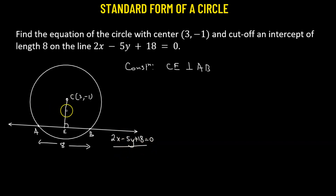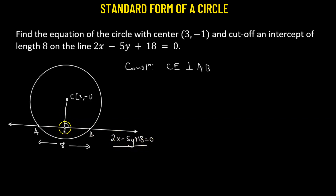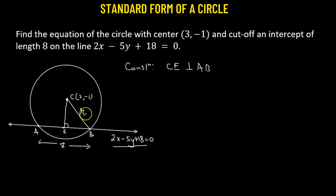Once we have the slope of CE and the coordinate of point C, we can use the point-slope form to find the equation of line CE. Then we find its intersection with the line 2x minus 5y plus 18 equals 0, which gives us point E. That lets us find the distance CE, and using the Pythagorean theorem with CB as the radius, we can finally determine the equation of the circle.